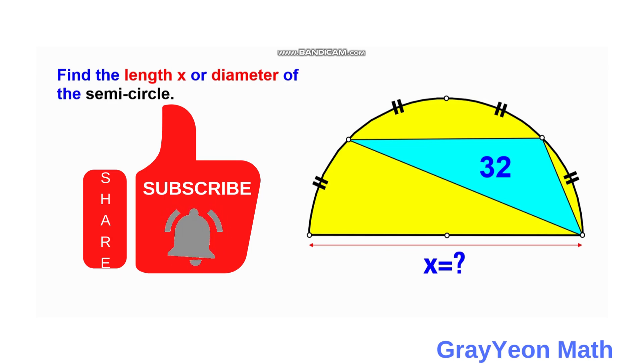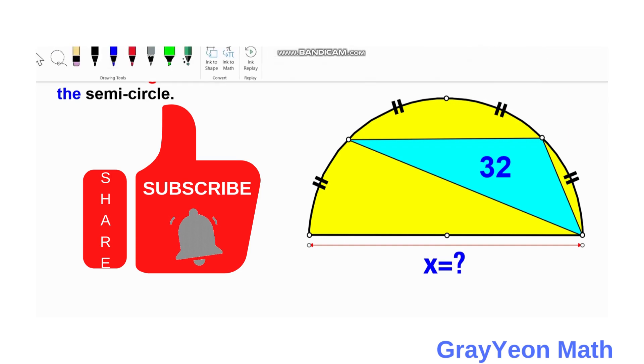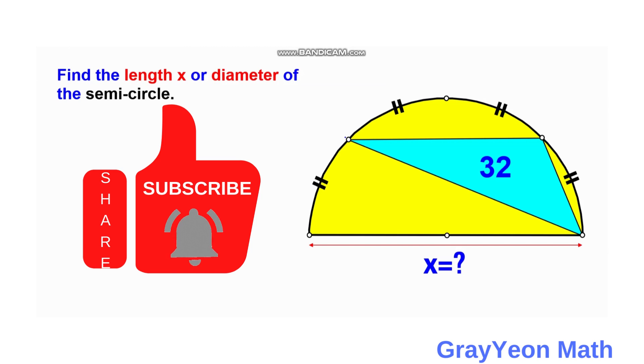Welcome to GrayYeon Math. We are asked to solve this problem: we have a yellow semicircle, and inside this semicircle is a triangle with an area of 32 square units. The vertices of this triangle lie on points which divide the semicircle arc into four parts.